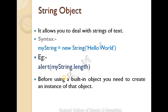For example, to check the length of a string, you use: alert(myString.length). Here myString contains 'Hello World'. The length is a property of the string object, and this displays the length in an alert box.